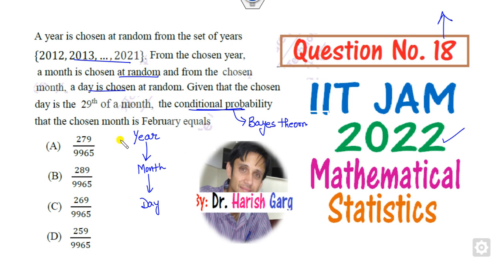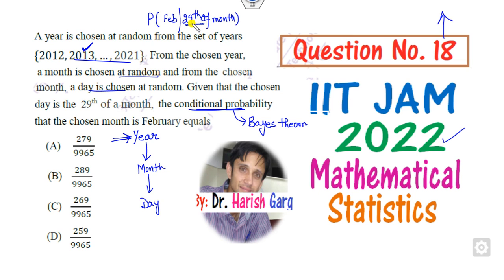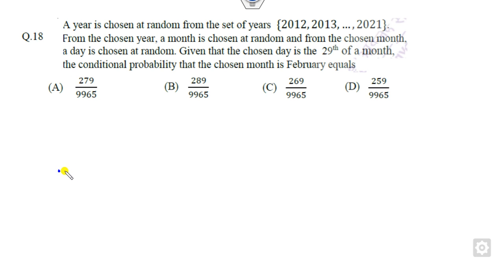First, think about the year. You have to find the probability of February, given that it is the 29th of the month. The 29th of February depends upon the year — whether it is a leap year or a non-leap year. So you have to start from these two cases: whether it is a leap year or a non-leap year.